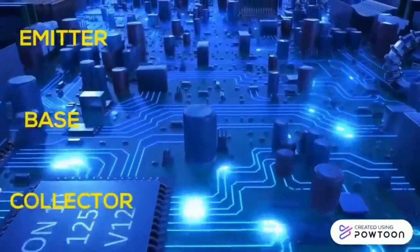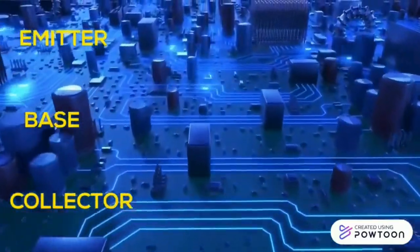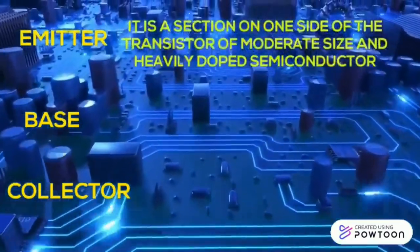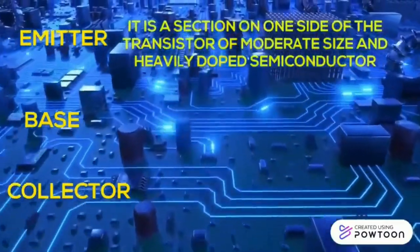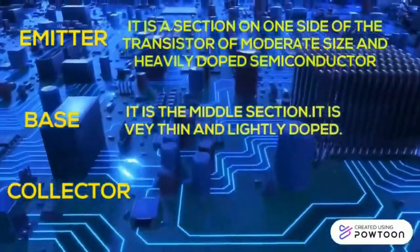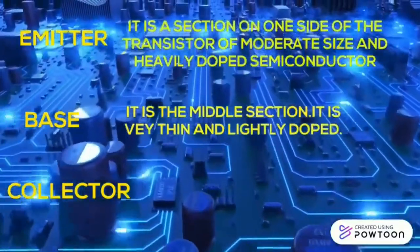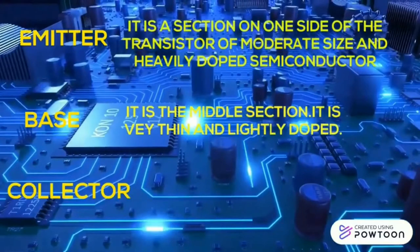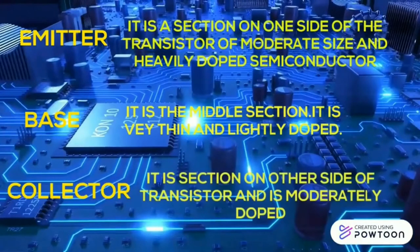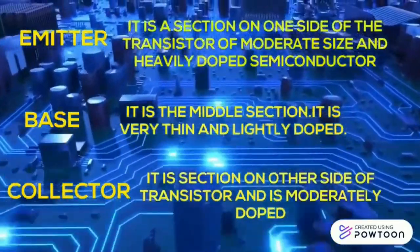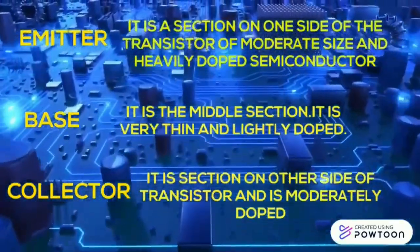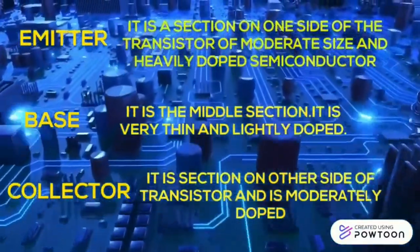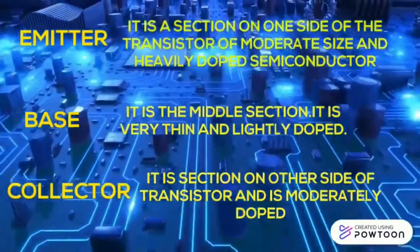Construction of a transistor: It consists of three main parts — emitter, base, and collector. The emitter is on one side, of moderate size and heavily doped, and supplies majority charge carriers for current flow. The base is the middle section, very thin and lightly doped, and controls majority charge carriers from emitter to collector. The collector is on the other side, moderately doped and larger in size than the emitter, and collects majority charge carriers for circuit operation.